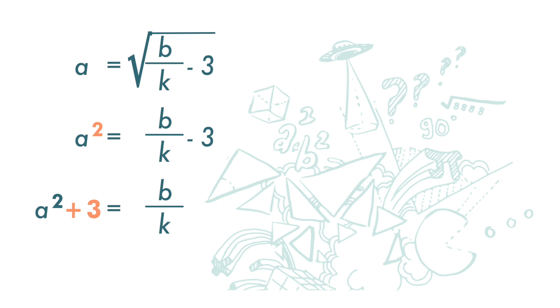We flip the fraction on both sides over. We get 1 over a square plus 3 equal to k over b.